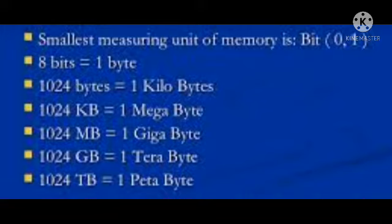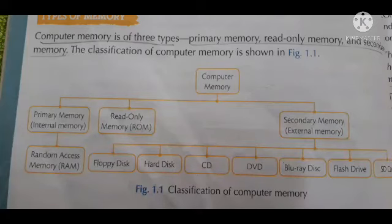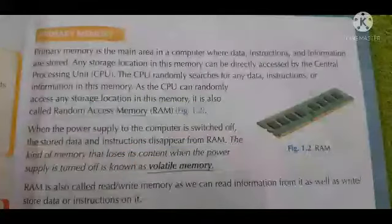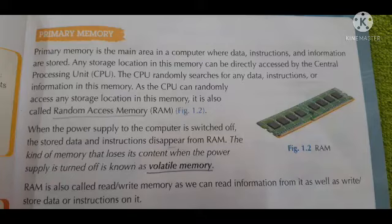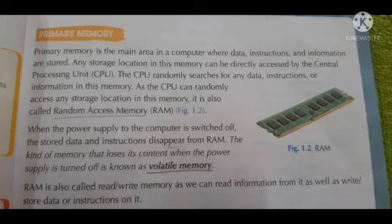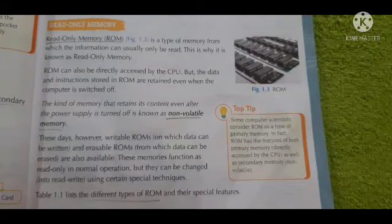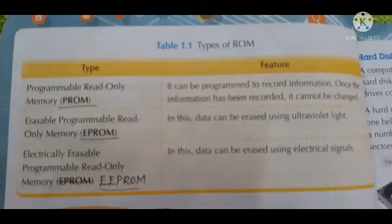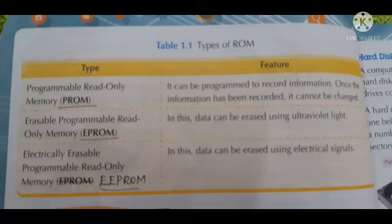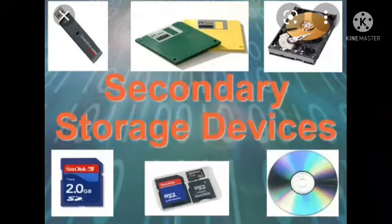We also learned about the three types of computer memory. Primary memory, also called RAM or volatile memory, loses its data when power is turned off. Read-only memory, or ROM, is non-volatile memory, and has three types: PROM, EPROM, and EEPROM. Then we learned about secondary memory with examples.